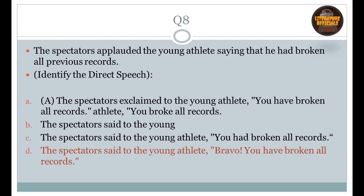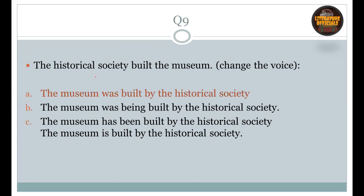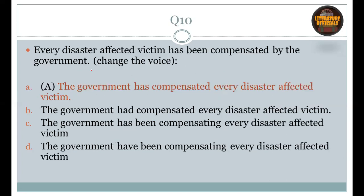Question number 8: The spectators applauded the young athlete, saying that he had broken all the previous records. The right option is D: The spectators said to the young athlete, 'Bravo, you have broken all the records.' Question number 9: The historical society built the museum — change the voice. Right option is A: The museum was built by the historical society. Question number 10: Every disaster-affected victim has been compensated by the government — voice change. Right option is A: The government has compensated every disaster-affected victim.